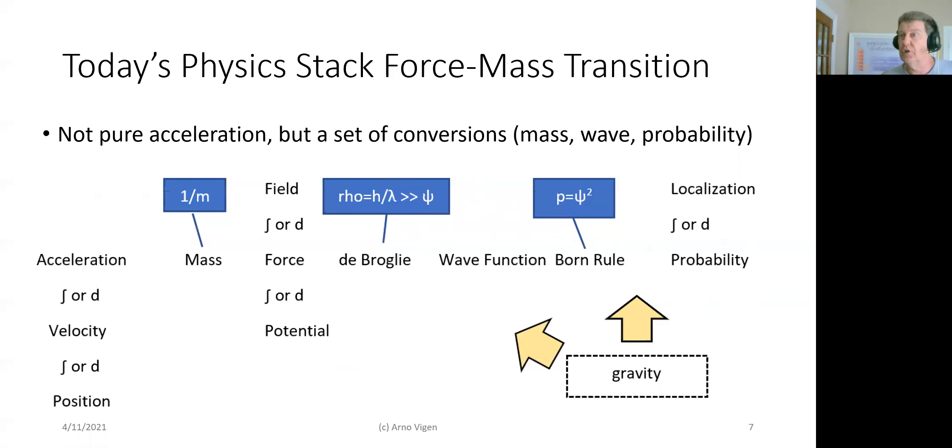And then Born did that to get the probability, and those are those big fuzzy balls you'll see out there to describe electron shells and where the electrons are.